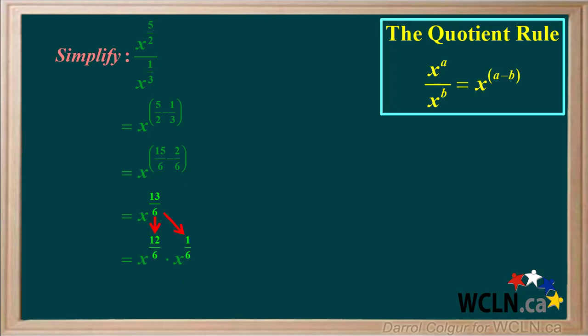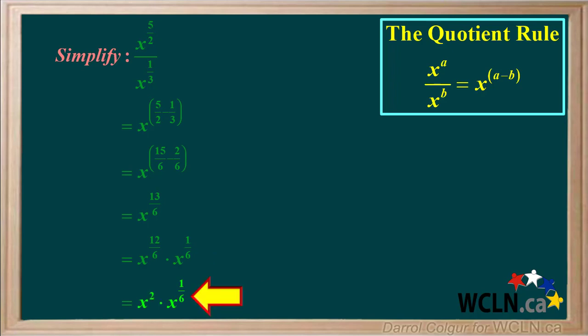x to the power of 13 sixths can be factored to x to the 12 sixths times x to the 1 sixth. x to the 12 sixths is equal to x squared, and we bring down x to the 1 sixth. So if we factor x to the 13 sixths, we get the answer x squared times x to the 1 sixth.